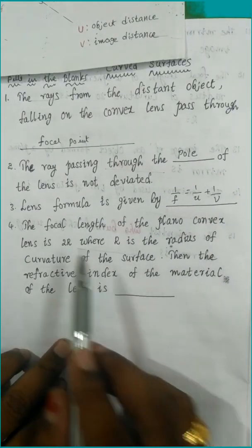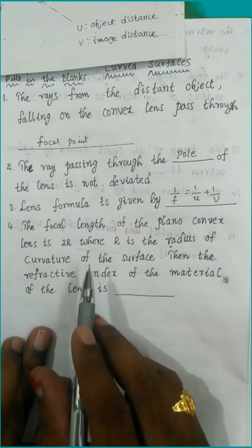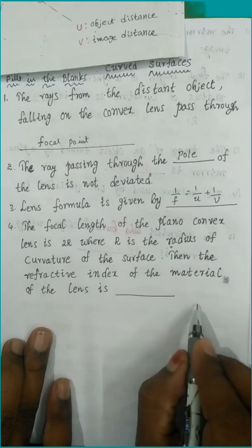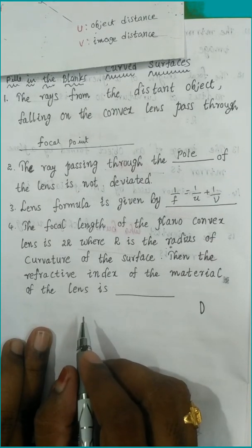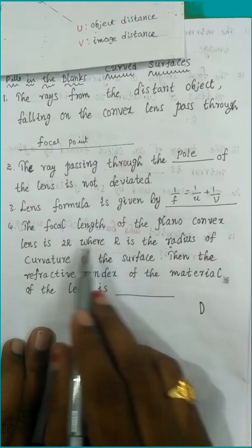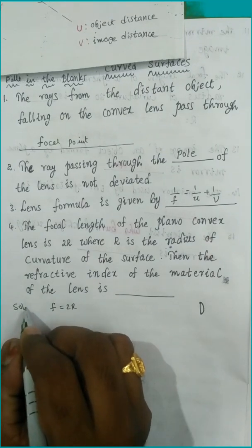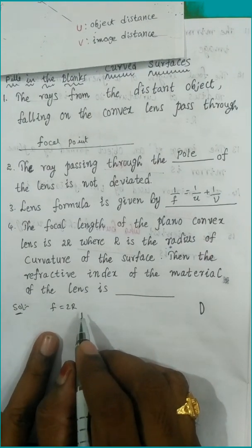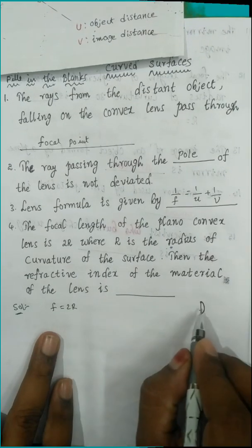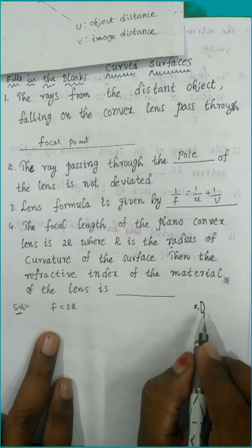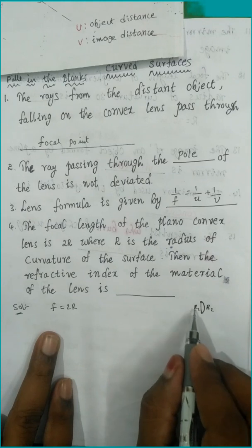The focal length of a plano-convex lens is given as f = 2R, where R is the radius of curvature. A plano-convex lens has one plane surface and one curved surface. It has two surface radii: R1 and R2.